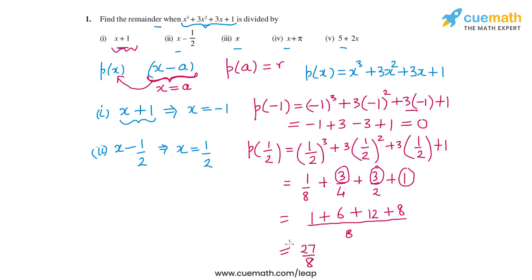So 27/8 is the remainder when p(x) is divided by (x - 1/2). Now let's go to the third part.